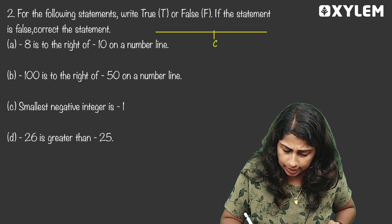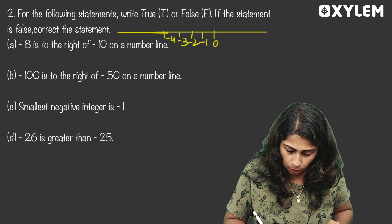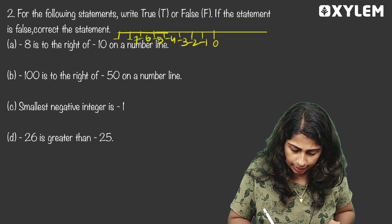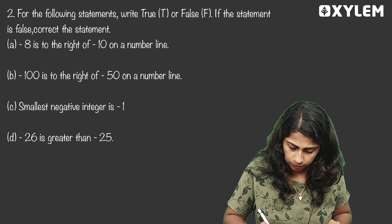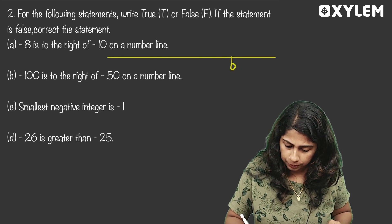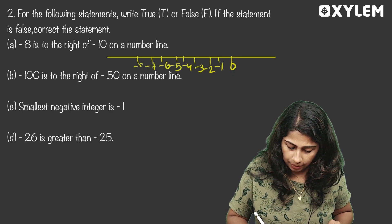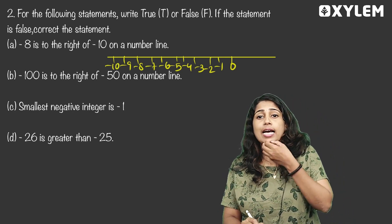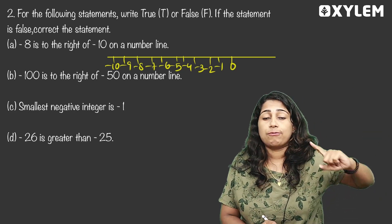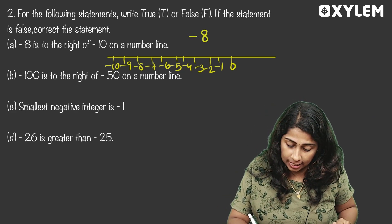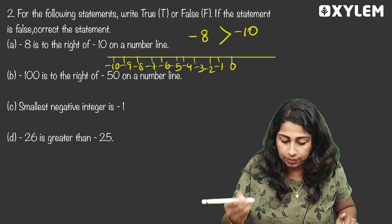We have a number line here with 0, negative 1, negative 2, negative 3, negative 4, negative 5, negative 6, negative 7, negative 8, negative 9, negative 10. Negative 10 is here on the left. Negative 8 is to the right of negative 10. So we say negative 8 is bigger than negative 10 — this statement is TRUE.